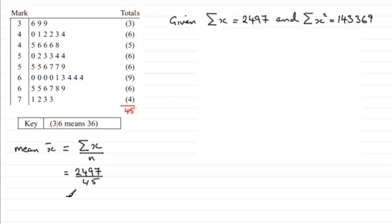If we round to one decimal place or three significant figures, it's going to be 55.5, to one decimal place. That's the mean of this set of data. Now we're asked to find the standard deviation.